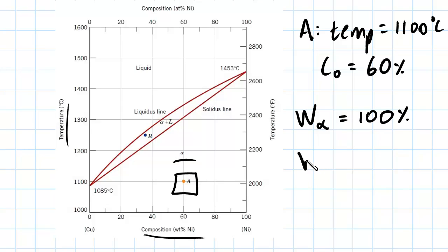Whereas conversely to that, the weight of the liquid is going to equal 0%. So if you had another item here, let's say point C, well that would have a 100% mass of liquid and 0% mass of solid.